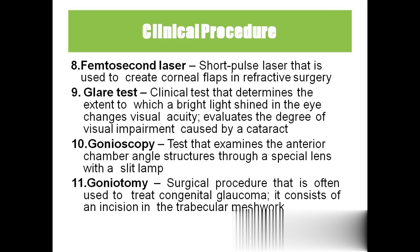Gonioscopy is used to check the anterior chamber or angle of the lens. And goniotomy is a surgical procedure used to treat congenital glaucoma — in goniotomy, they will cut the trabecular meshwork.